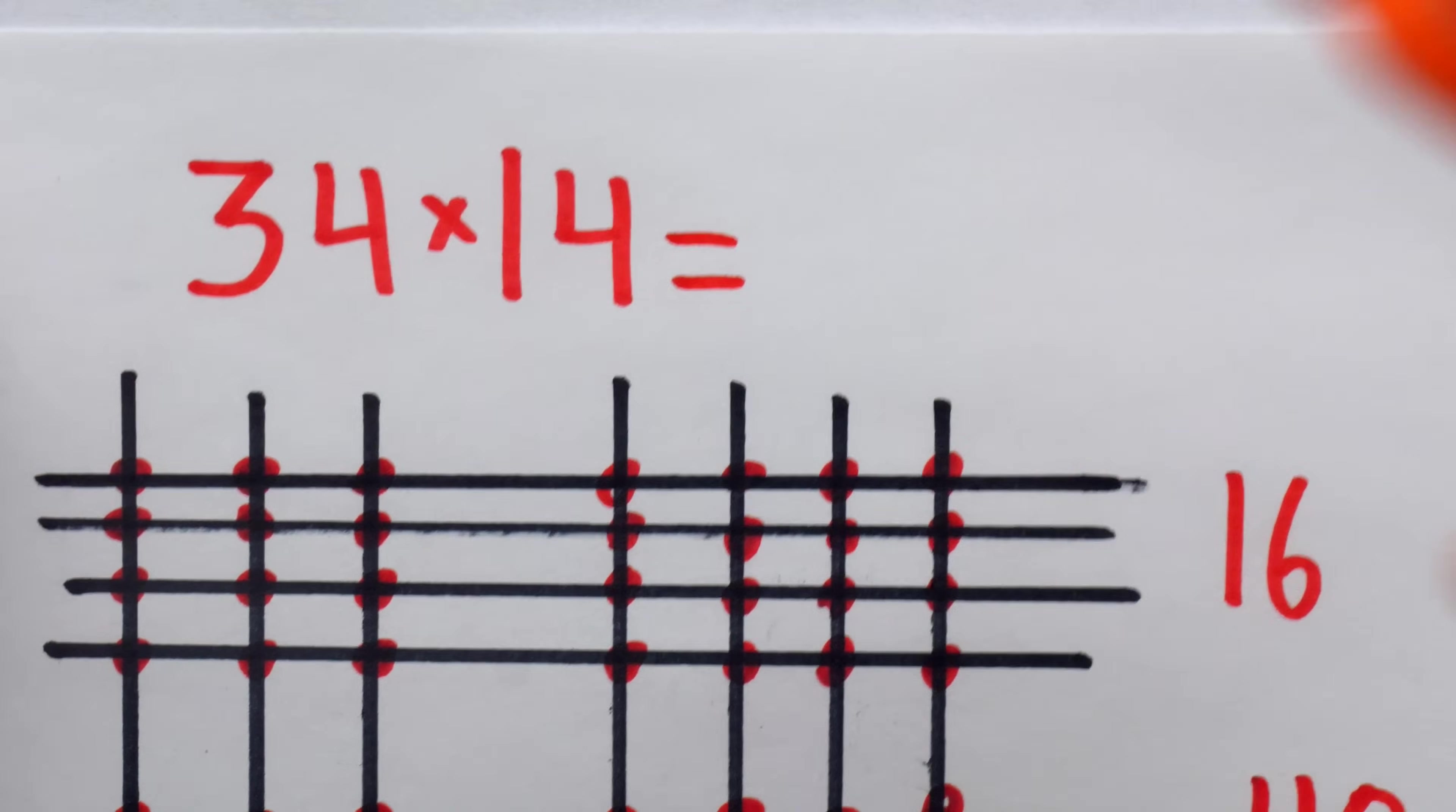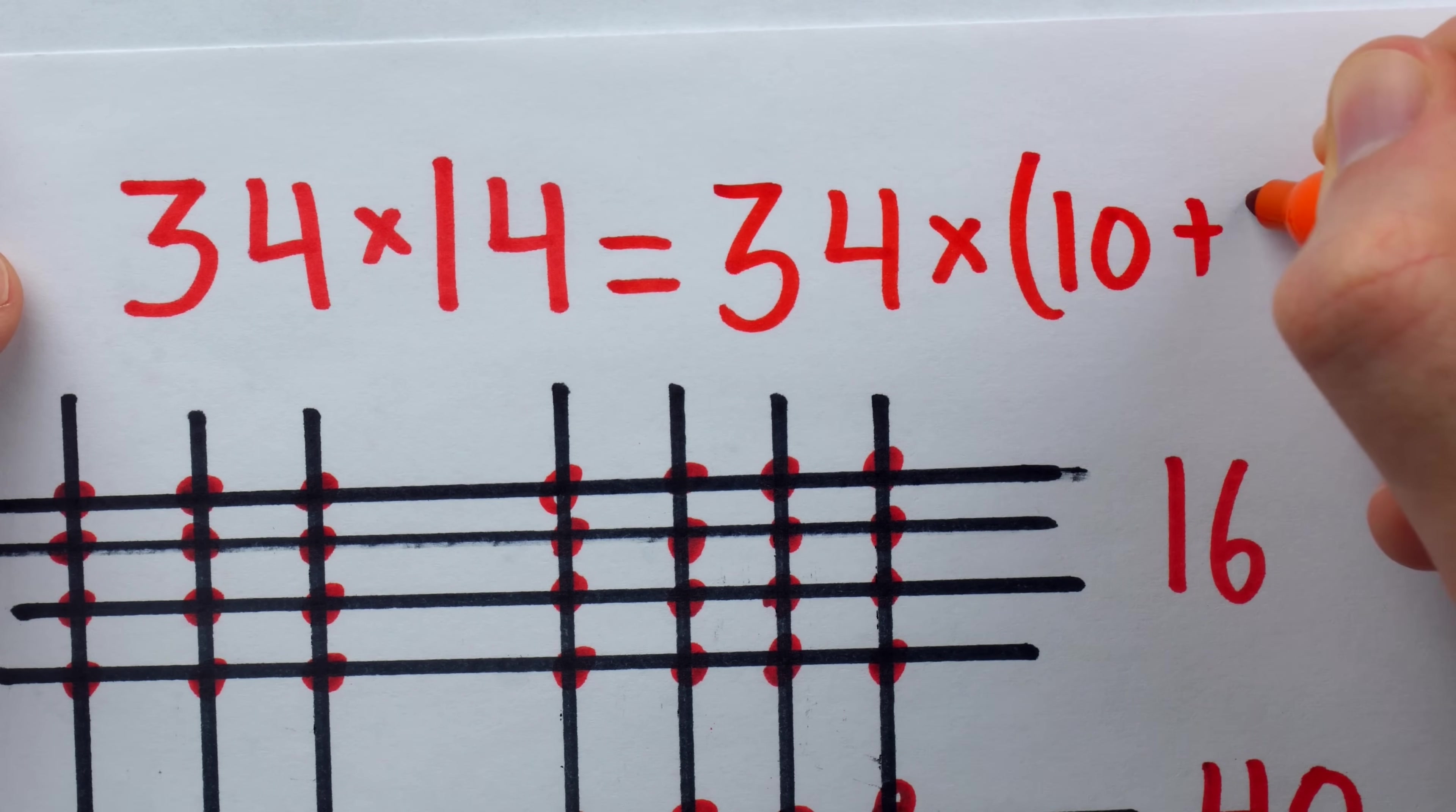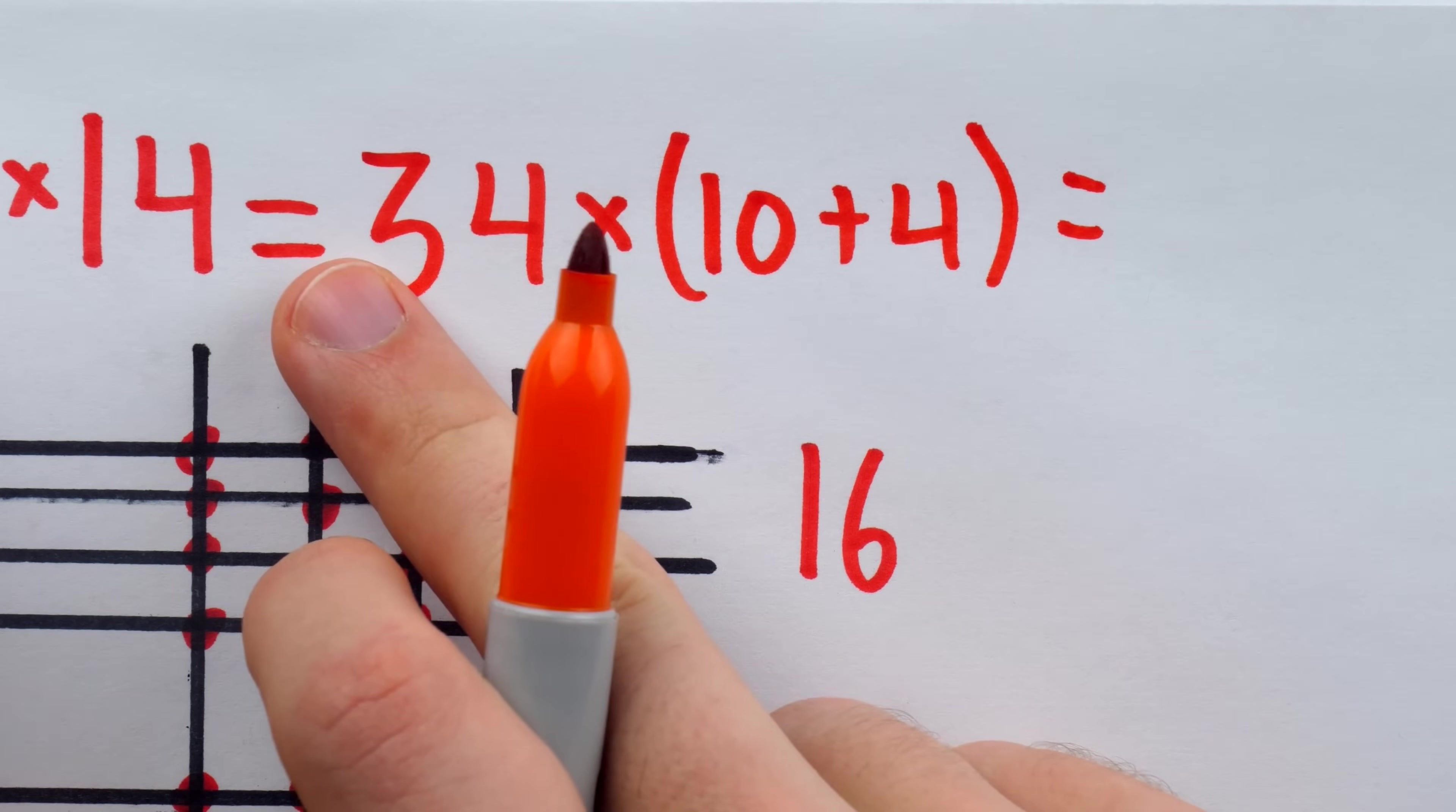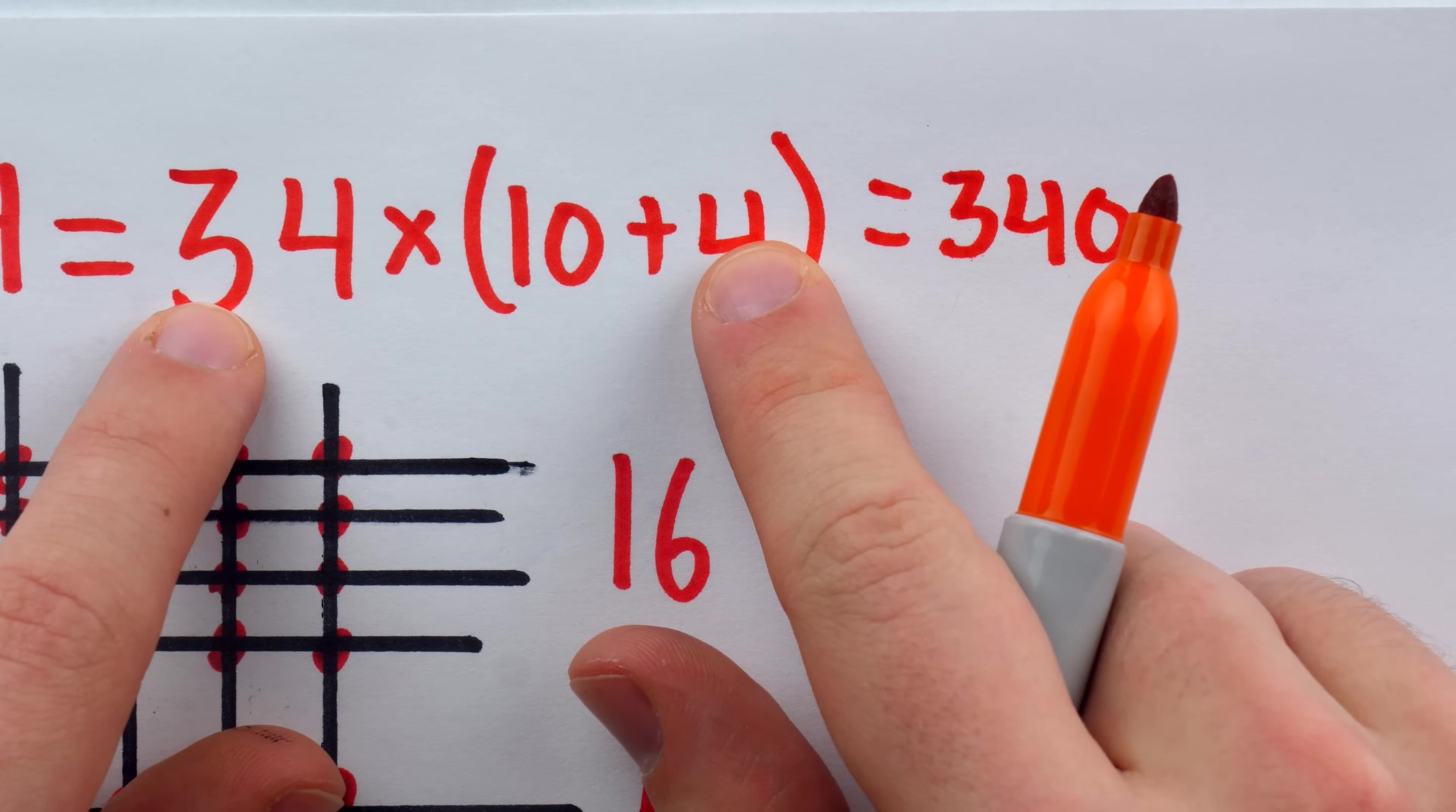Of course, we could have done that much more quickly by just splitting the 14 up and using the distributive property. It's 34 times 10 plus 4. And then we have two pretty easy multiplications to do. 34 times 10 is 340. And to do 34 times 4, I do 4 times 30, which is 120.